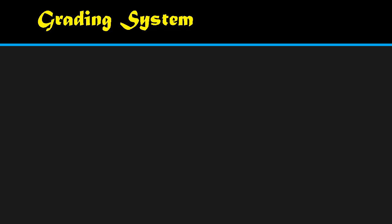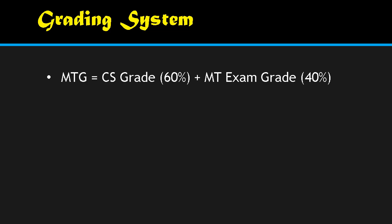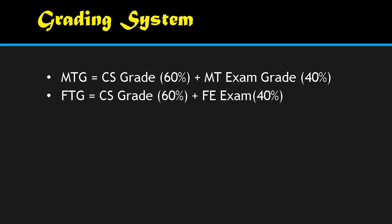For the computation of your grade, here is your grading system. For the midterm total grade: class standing is 60 percent plus midterm exam grade which is 40 percent. For your final total grade: class standing grade is 60 percent plus final examination which is 40 percent. To compute your final grade, take your midterm total grade at 50 percent plus your finals total grade at 50 percent — just get the sum and you have your final grade.